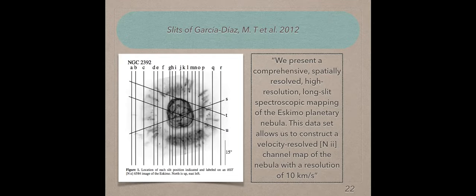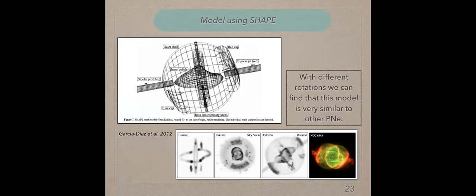This data set allows us to construct a velocity result nitrogen channel map of the nebula with a resolution of 10 km per second. They built a model using the software shape that I show you in this slide. In the slit U, that this is inclined in this image, they found a spectroscopic collimated outflow. We can observe this collimated outflow in this position velocity diagram. You can observe this collimated outflow at less than 100 km per second, and also at 240 km per second.